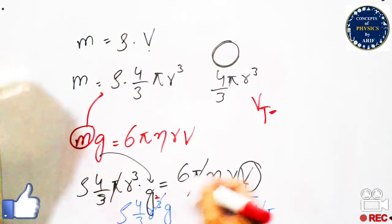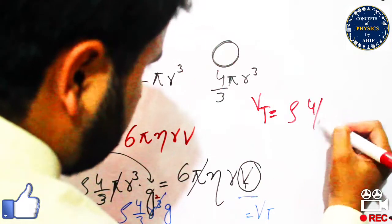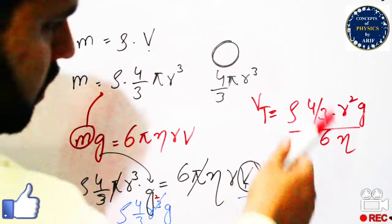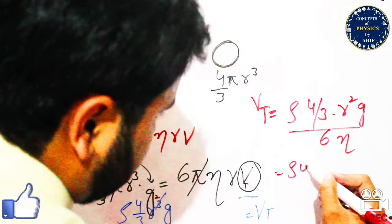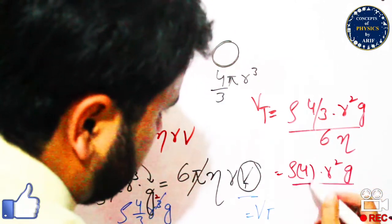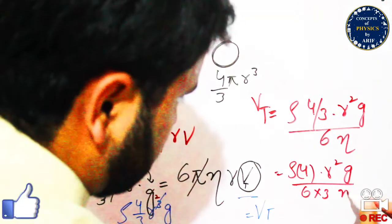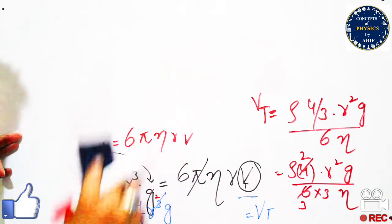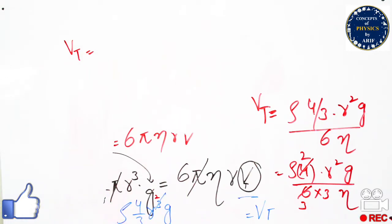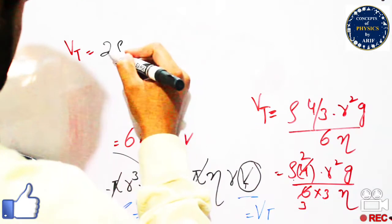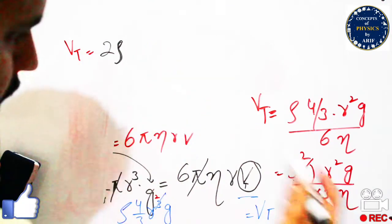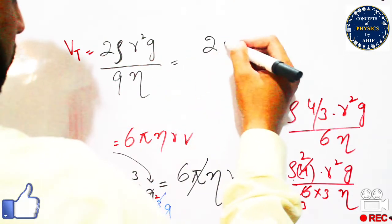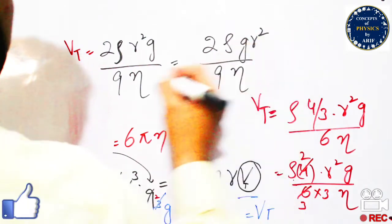So terminal velocity becomes: Vt = ρ × (4/3) × r² × g / (6η). Simplifying the constants 4/3 divided by 6 gives 2/9, so the final expression for terminal velocity is: Vt = 2ρgR² / (9η).